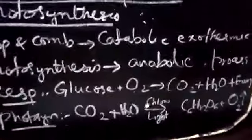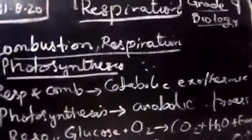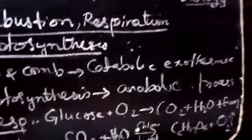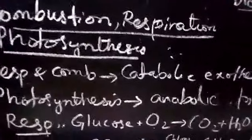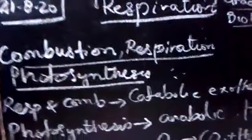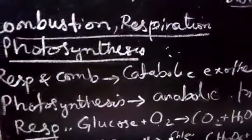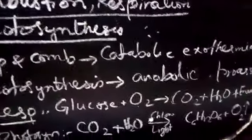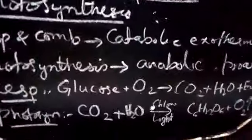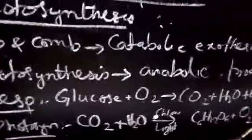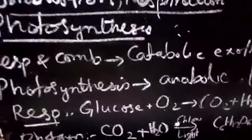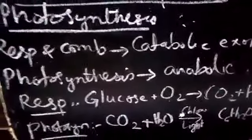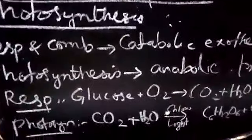Photosynthesis takes place only in the presence of sunlight. In the presence of light, carbon dioxide and water are converted to glucose. In plants, during daytime, photosynthesis takes place.